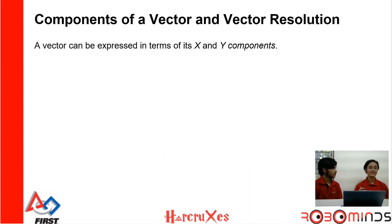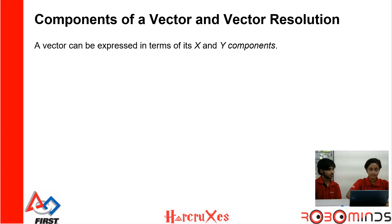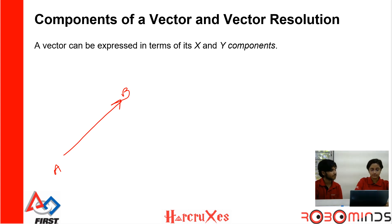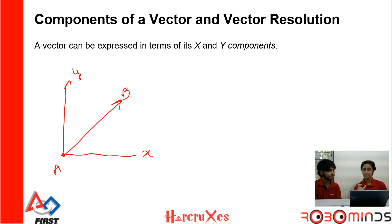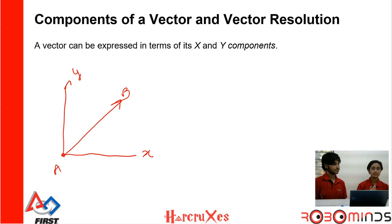Now that we've covered the basics of vectors, we can move on to components of a vector and vector resolution. Let's say I have a vector A pointing in a certain direction. The first thing we do when starting vector calculations is drop our x and y axes from the tail of the vector. Components of a vector means that if you walked from point A to point B, you covered a certain distance along both the x and y axes — those are the components.